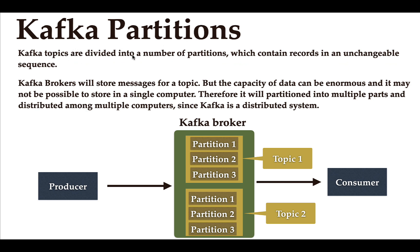What are Kafka partitions? Kafka topics are further divided into a number of partitions, which contain records in an unchangeable sequence. As you can see in the diagram, topic one is divided into partition one, two, and three, and topic two is similarly divided. The idea behind partitions is that the capacity of data can be enormous and may not be possible to store on a single computer, so it is partitioned and distributed among multiple computers since Kafka is a distributed system.